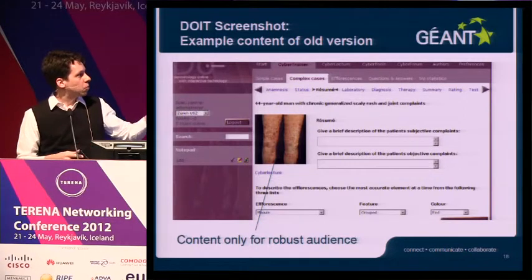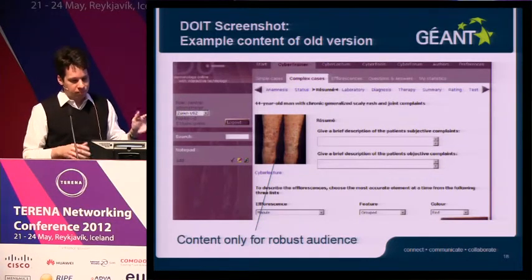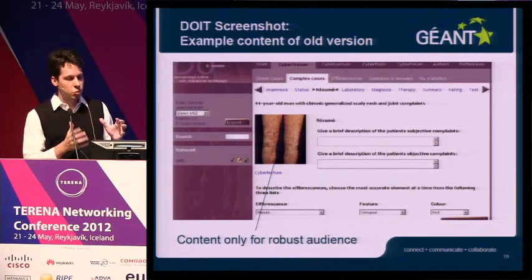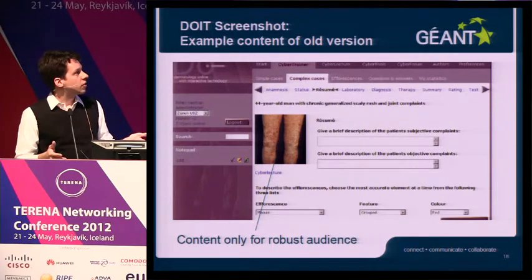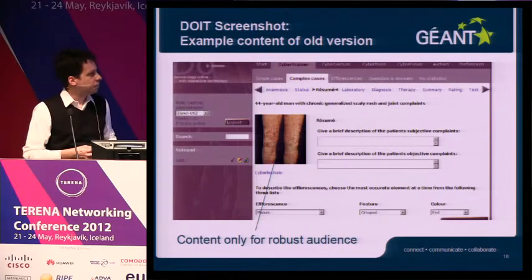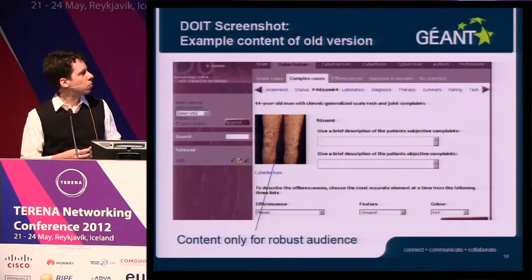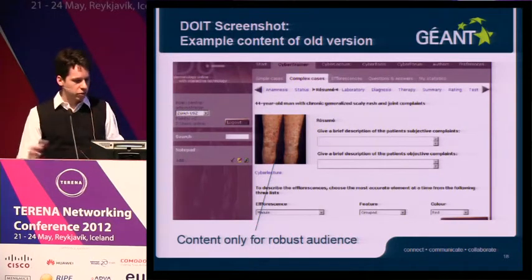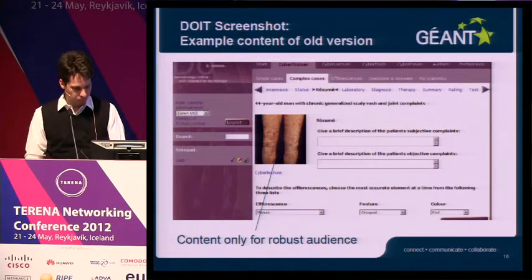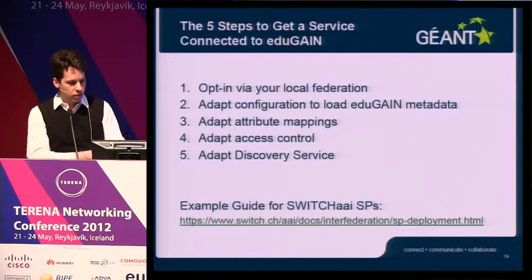DoIT is a service that partners with universities from 40 countries in the world. They already are part of Switch AAI and have been one of the first services actually in Switch AAI. So there is already some knowledge around how to deal with federated identity management users. DoIT proved to be the perfect candidate for this pilot study. It's great that this presentation is before lunch, because otherwise the dermatology images might be less welcome.